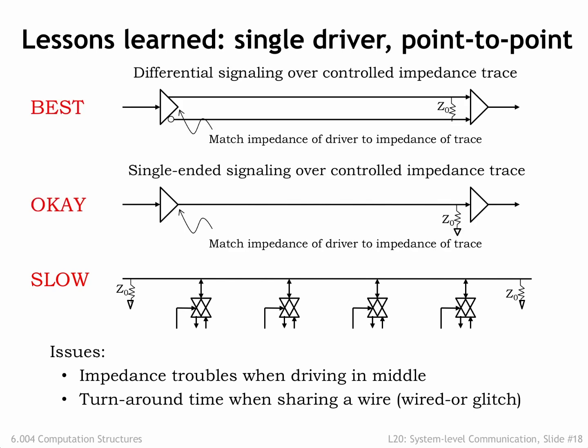Experience in the network world has shown that the fastest and least problematic communication channels have a single driver communicating with a single receiver — what's called a point-to-point link. Using differential signaling is particularly robust. With differential signaling, the receiver measures the voltage difference across the two signaling wires.